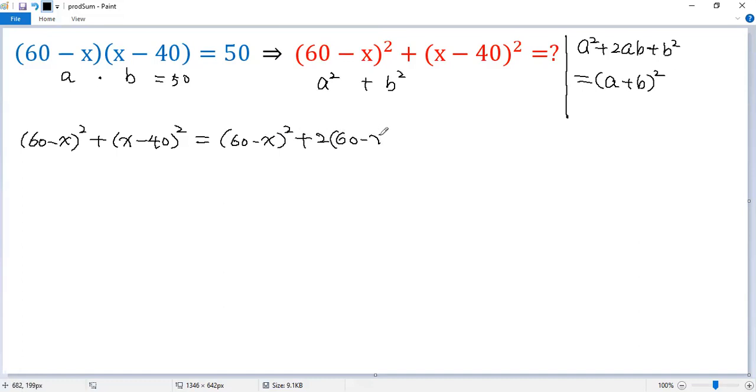a is 60 minus x, b is x minus 40 plus b squared. So (x minus 40) squared. We need to minus this term to balance, so minus 2 times (60 minus x) times (x minus 40).